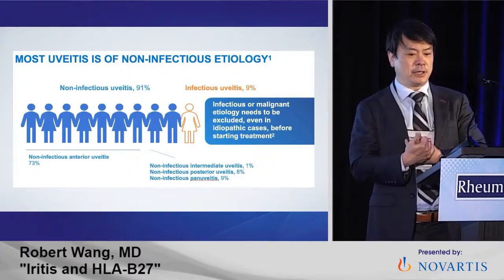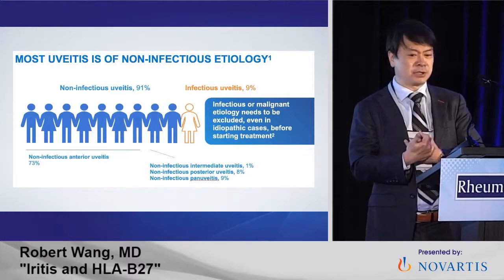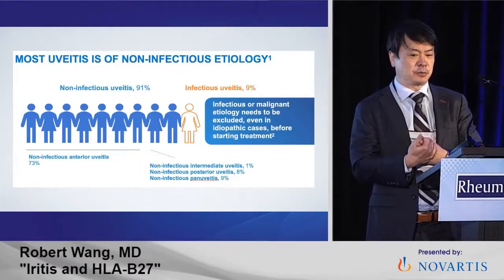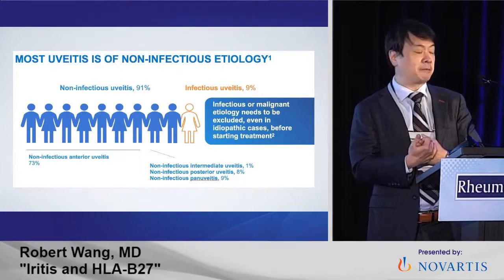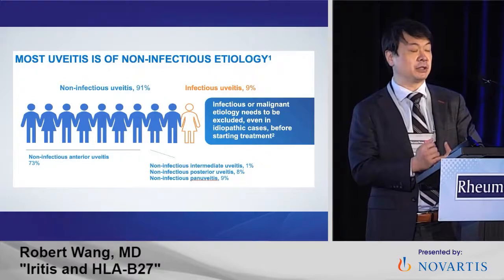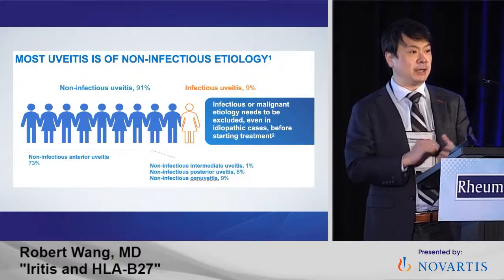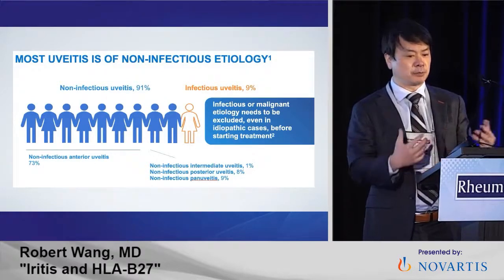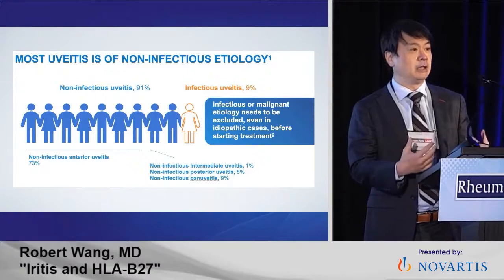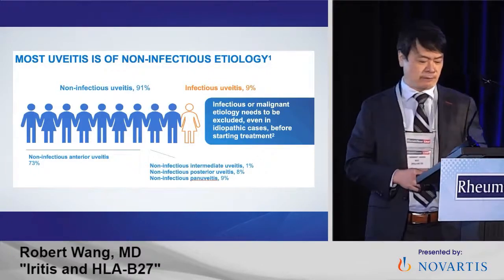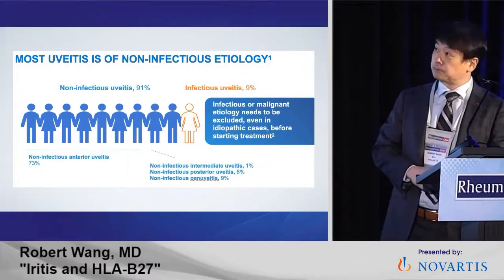If you look at intermediate uveitis, maybe 1% of this group; noninfectious posterior uveitis, 8%; and pan-uveitis, 9%. So that is a very small group of patients we are dealing with. But the bread-and-butter is anterior uveitis that we see in the front of the eye.